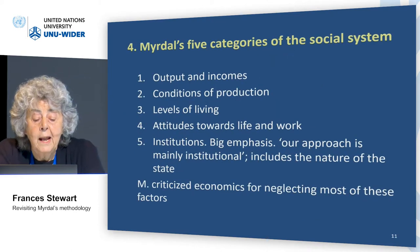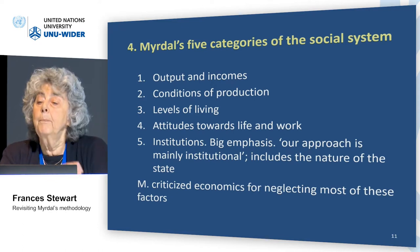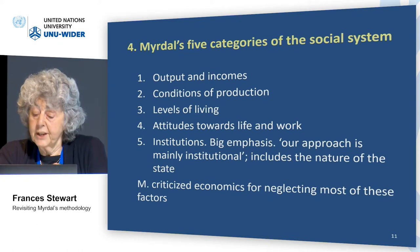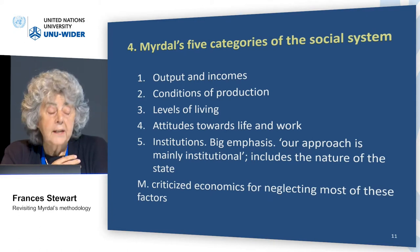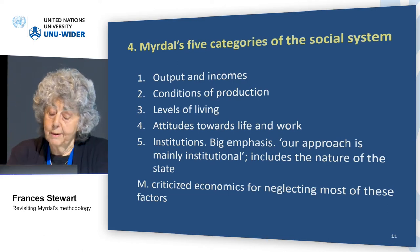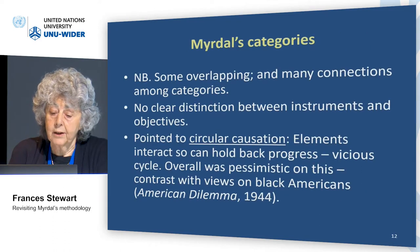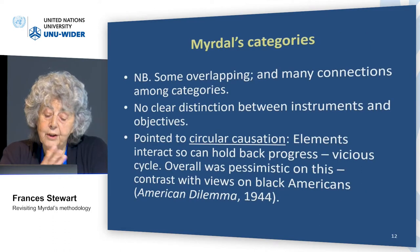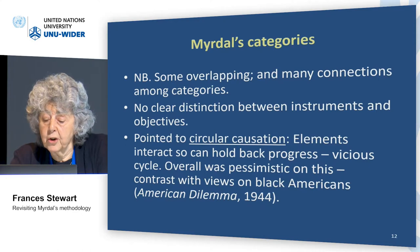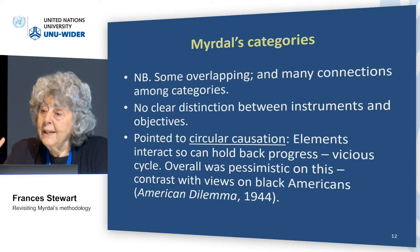Now here are the five categories: output and incomes, conditions of production — you can read them. He places a big, big emphasis on institutions. His approach is mainly institutional. And he includes the nature of the state as a very important actor. He criticised economists for neglecting these five factors and just looking at investment and growth. Of course, the five are not completely separate — they have a lot of links. Levels of living and output and incomes are very highly linked. And there isn't a clear distinction between instruments and objectives. But the importance of the five things is they point to circular causation — if you fail on one, you may hold back everything on the other. On the other hand, if you succeed on one or two, you might push things forward.